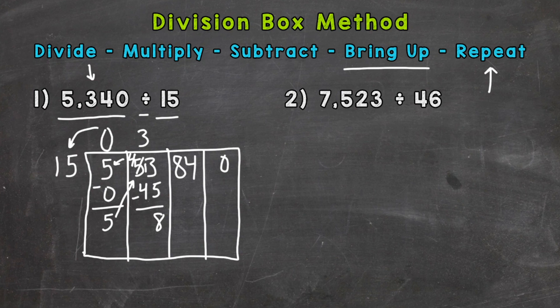And we repeat. So we go back to divide. So we have 84 divided by 15. Well, we know that 15 times 6 is going to give us 90. So that's a little bit too much. So we're going to scale it back to 15 times 5, which is 75. So we can pull 5 whole groups of 15 out of 84.